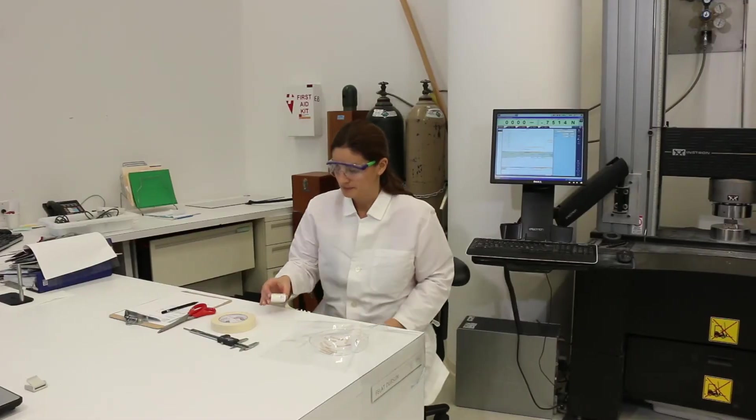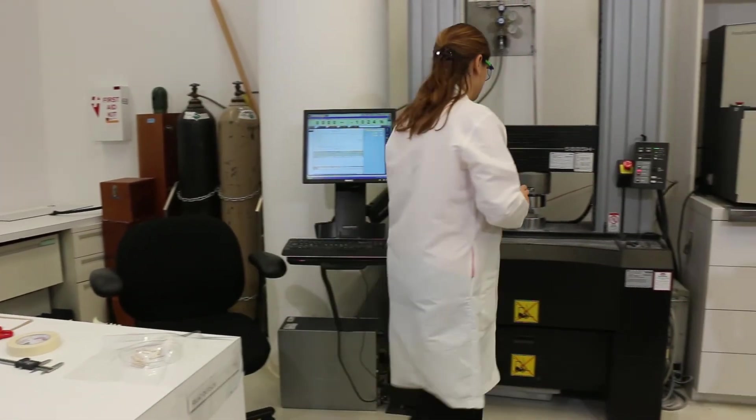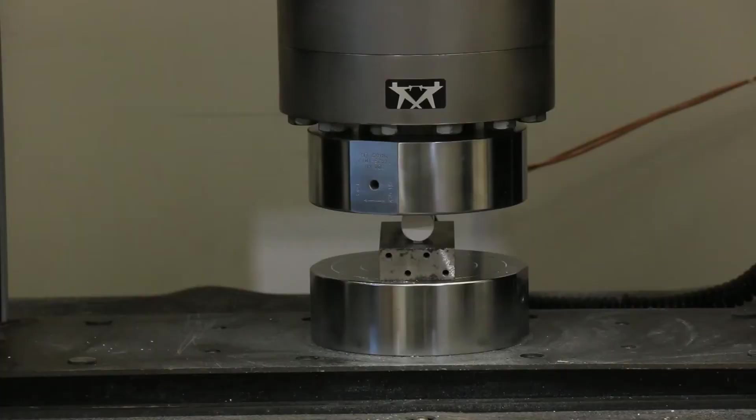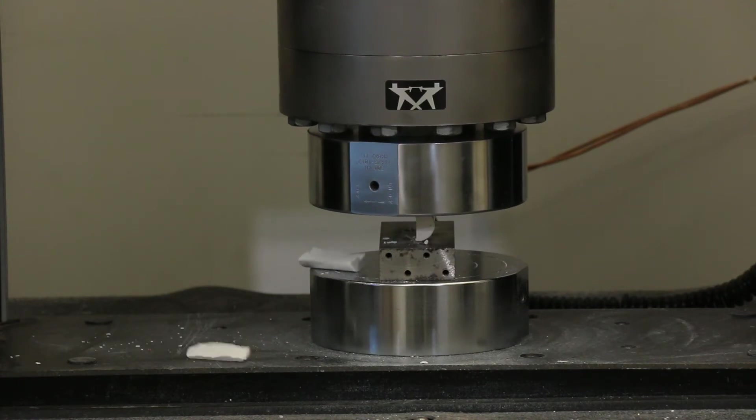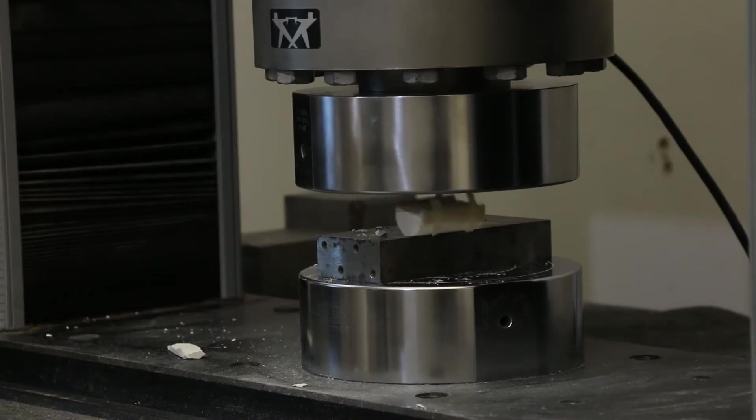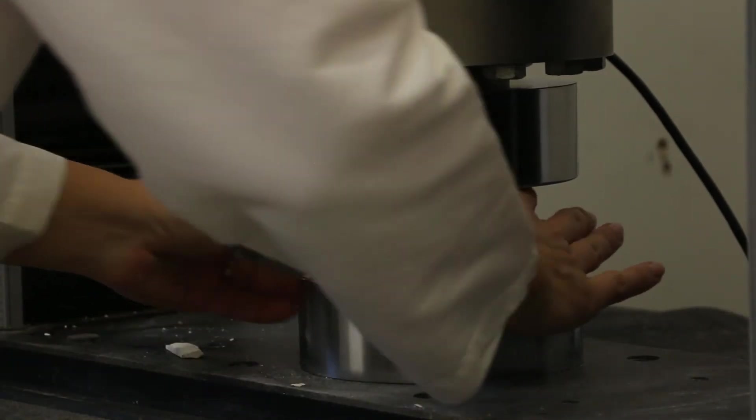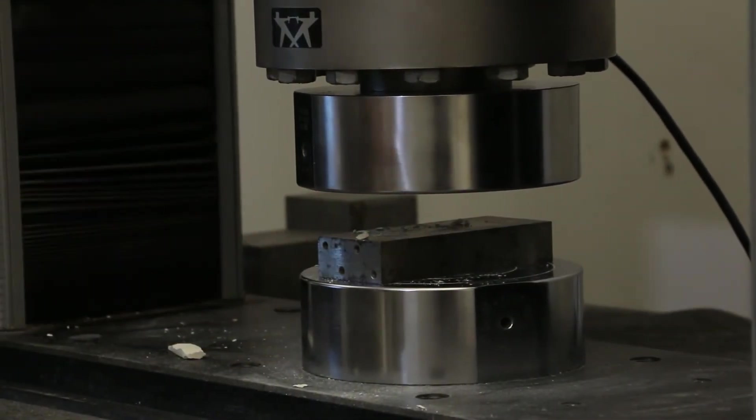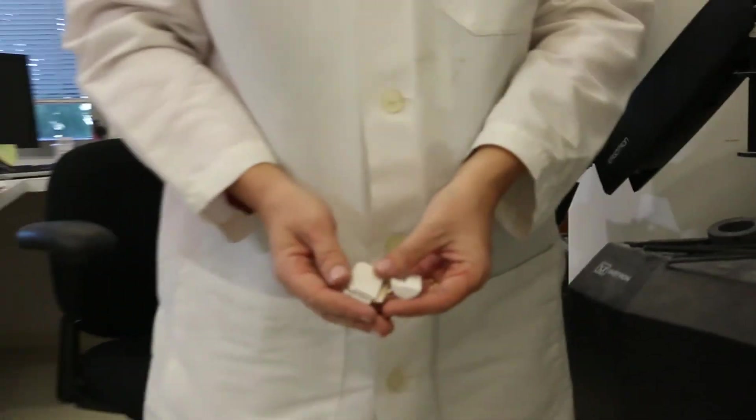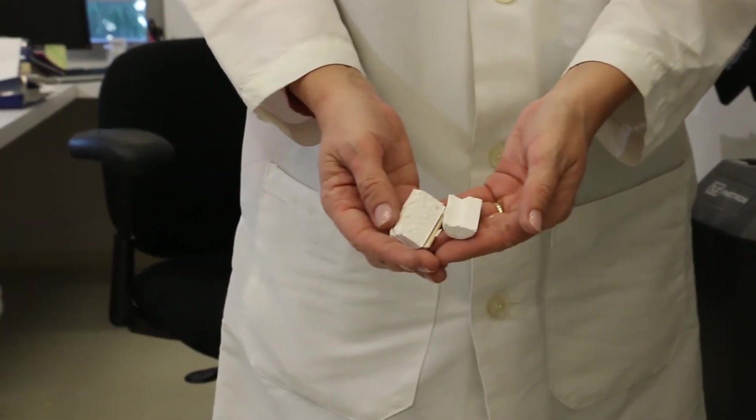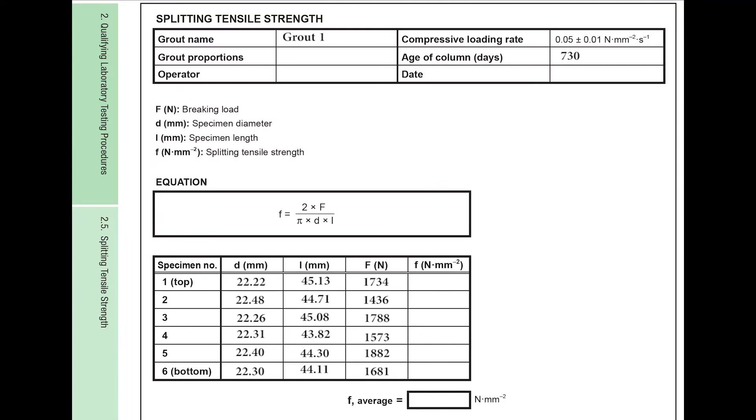Finally, place the specimen on its side into the mechanical testing machine and apply the compressive load through the wooden strips. All the specimens are tested at a constant loading rate of 0.05 MPa per second in compression. Record the breaking load in newtons on the data collection sheet.